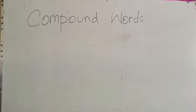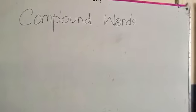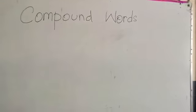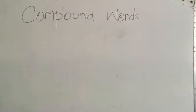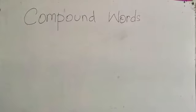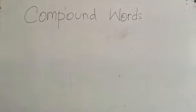The definition of compound words is that two or more words join together to form a new word. Kisi bhi do words ko milane ke baad ek new word ban jaye, usse English mein compound word kehate hain. For example,